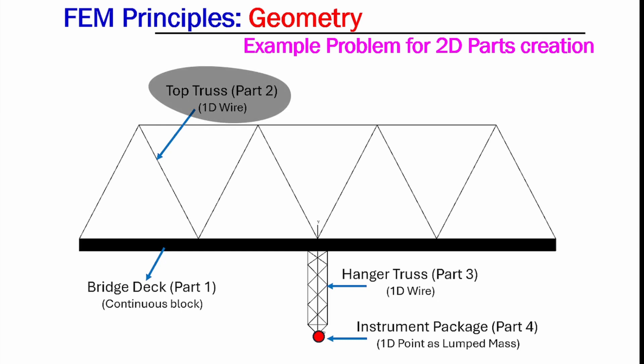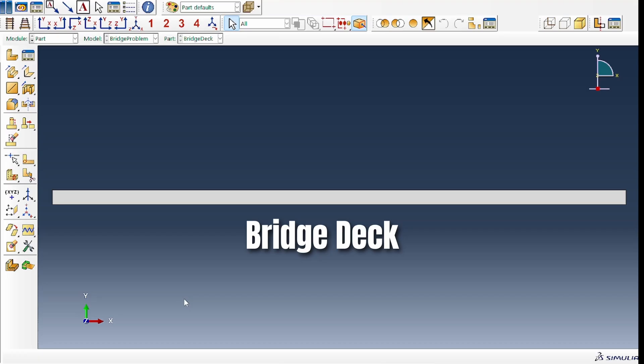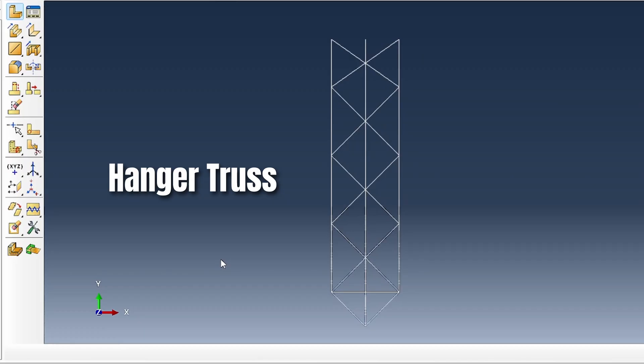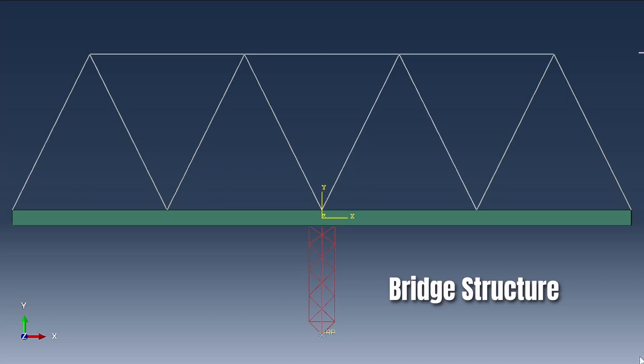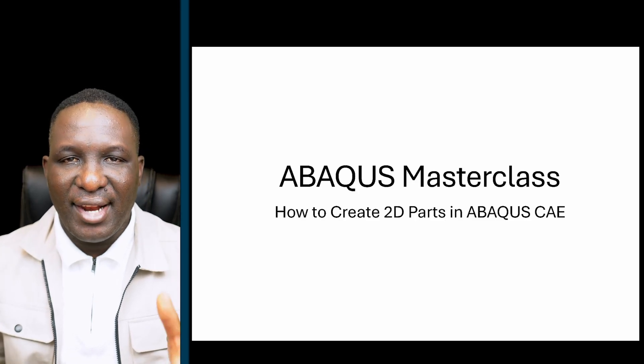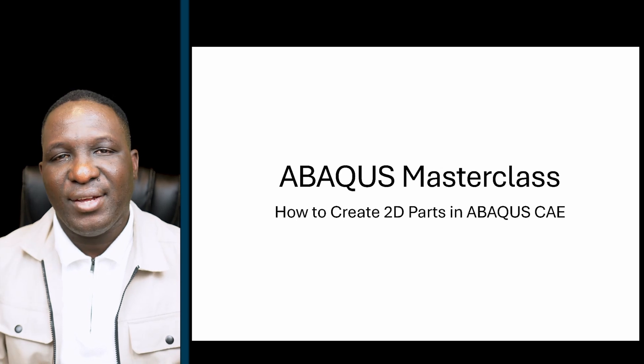These consist of the bridge truss, the bridge deck, the rigid hanger, and lumped mass. You'll learn how to represent each component using 2D planar features and understand how these individual parts come together to form a functional finite element model. If you're interested in this video, let's sit back and relax as we get started.